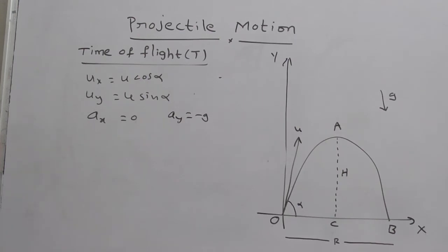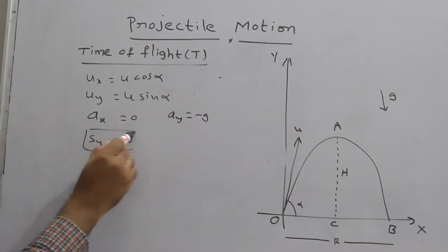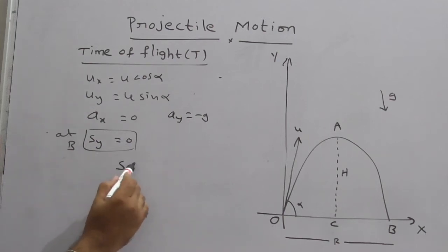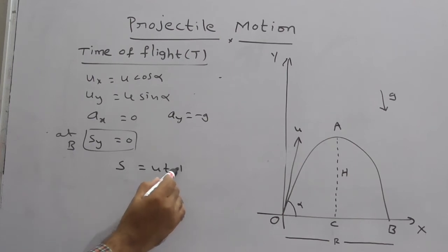Now, clearly observe. At point B, sy is equal to 0. At point B, sy is equal to 0. So previously already explained, what is formula for displacement with respect to y-axis? That is, sy is equal to—what is s? S is ut plus half a t square. All you know this very well.